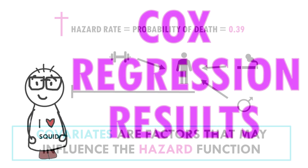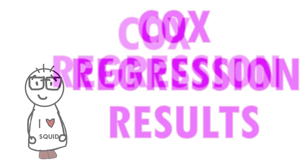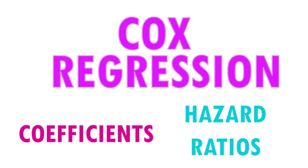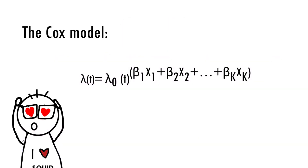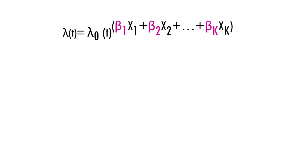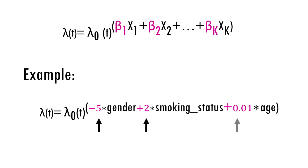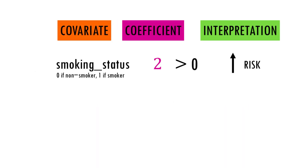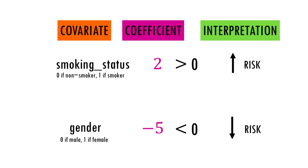Now let's talk about the outputs of Cox regression. The Cox model mathematically models the hazard function as a function of covariates — your independent variables. For every covariate, we get a coefficient. These beta values indicate the log hazard ratio associated with that specific covariate, assuming all other covariates remain constant. A positive coefficient — when beta is greater than zero — indicates an increase in the log hazard, so a higher risk. A negative coefficient indicates a decrease in the log hazard, and a coefficient around zero means there is no difference in the hazard.